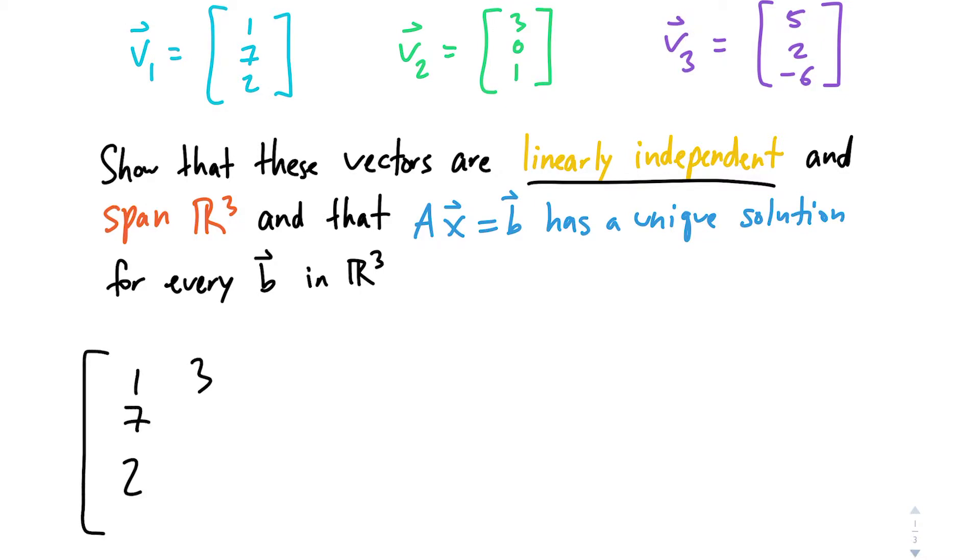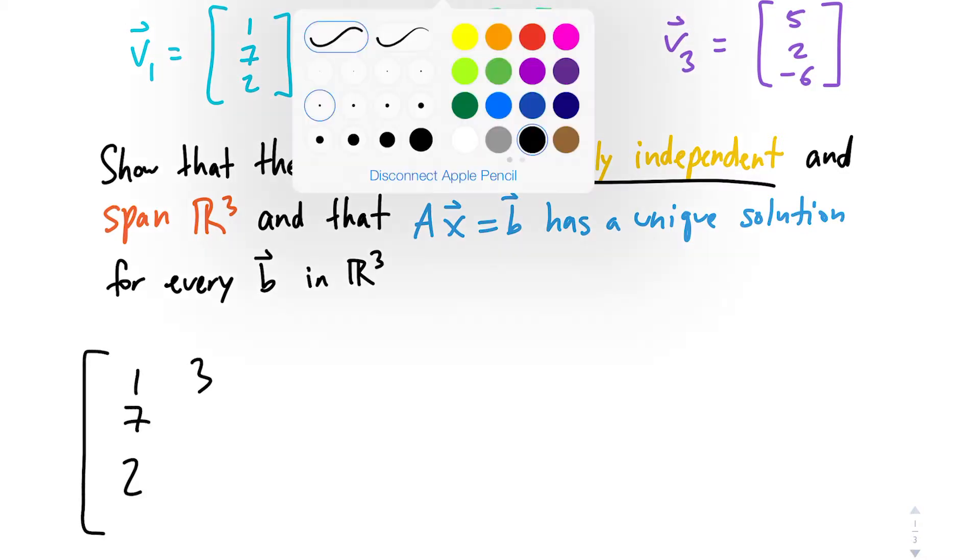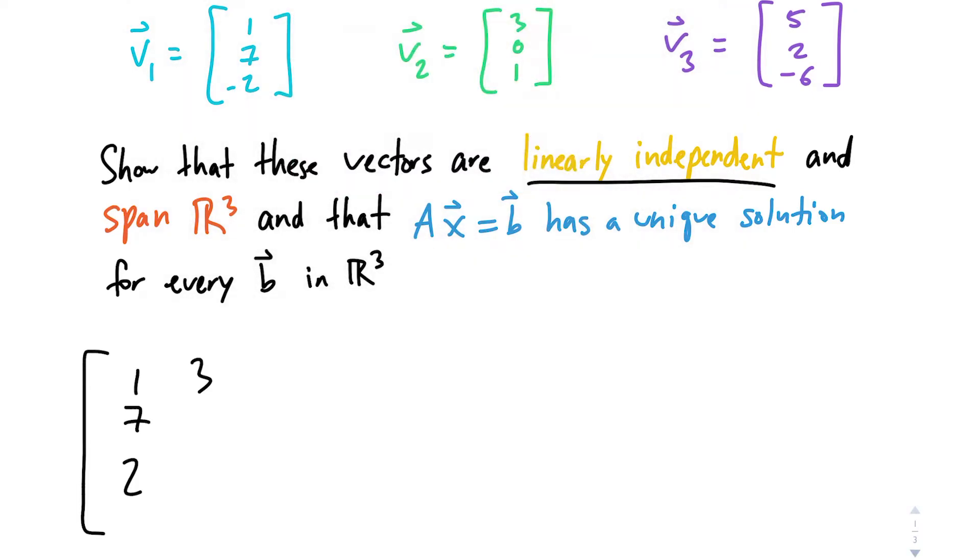So row operations are the best. Also, sorry, this is supposed to be a negative. Let me make sure these other numbers are correct. These other numbers are correct. 5, 2, negative 6.